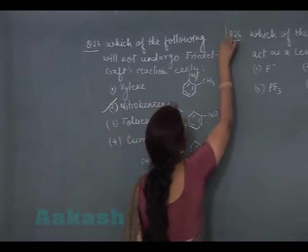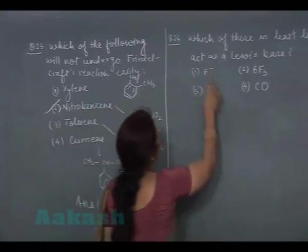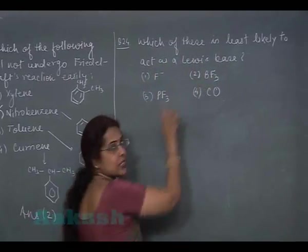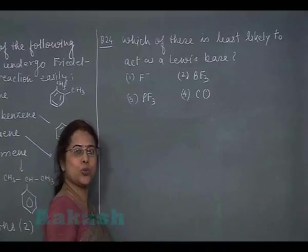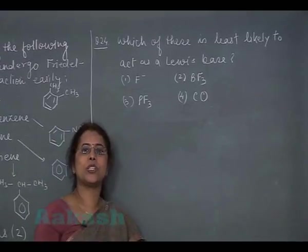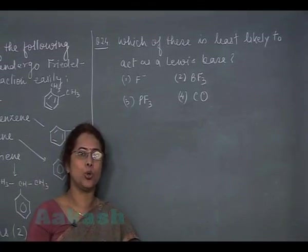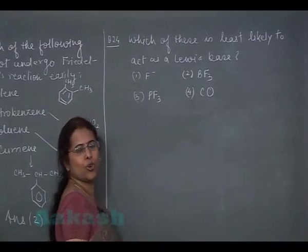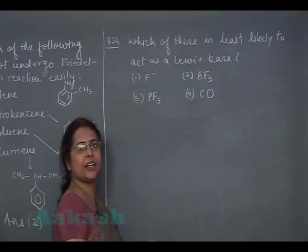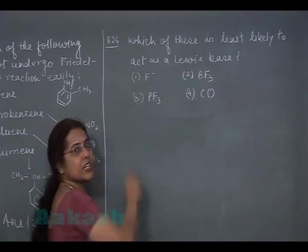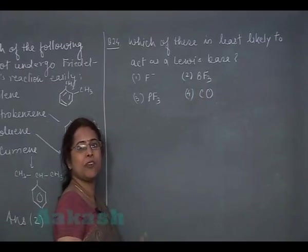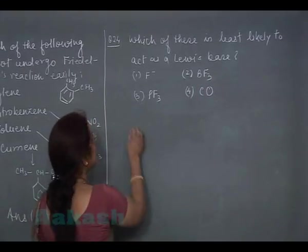Next question, question number 24. Which of these is least likely to act as a Lewis base? Lewis base is that substance which has the tendency to donate electron pair. Now see, this is fluoride ion. Fluoride ion will easily act as Lewis base. There is a negative charge. Second option is BF3. BF3 is an electron deficient compound.